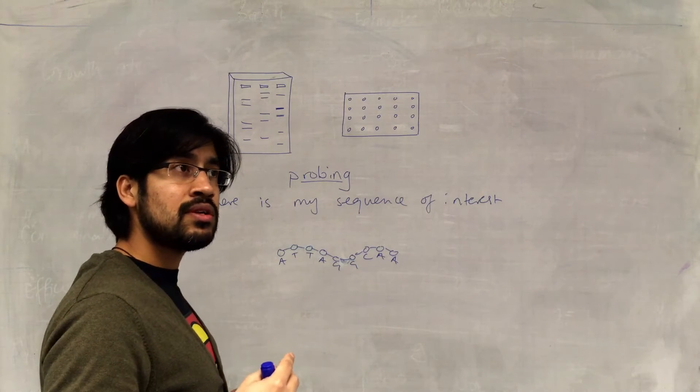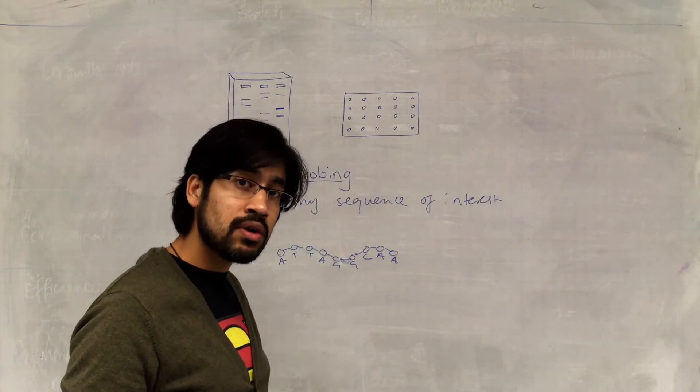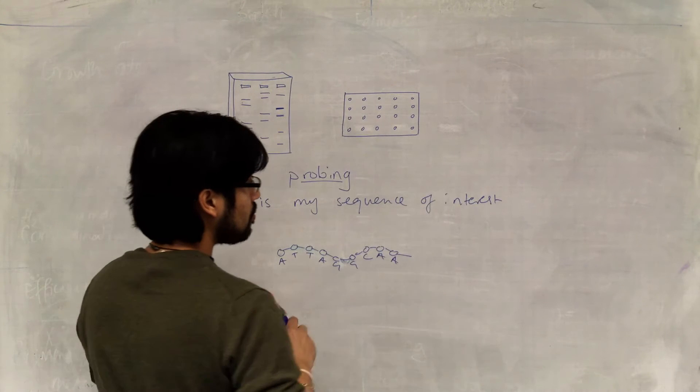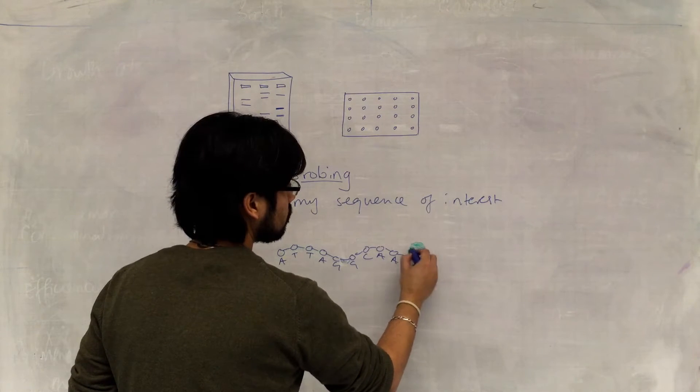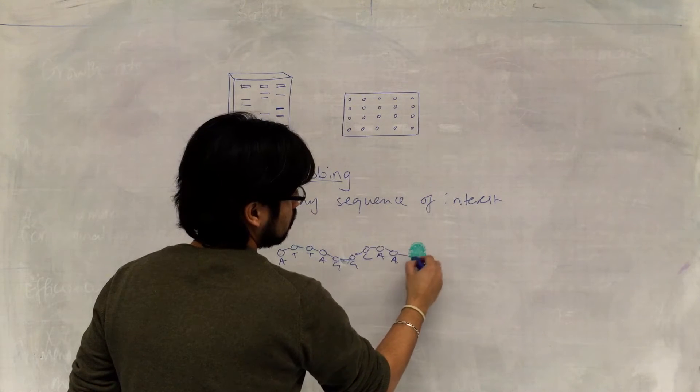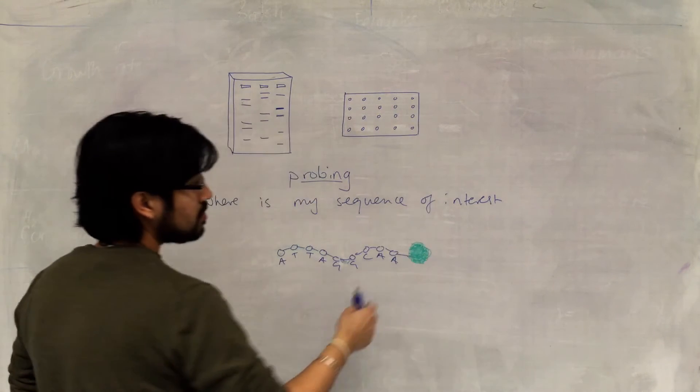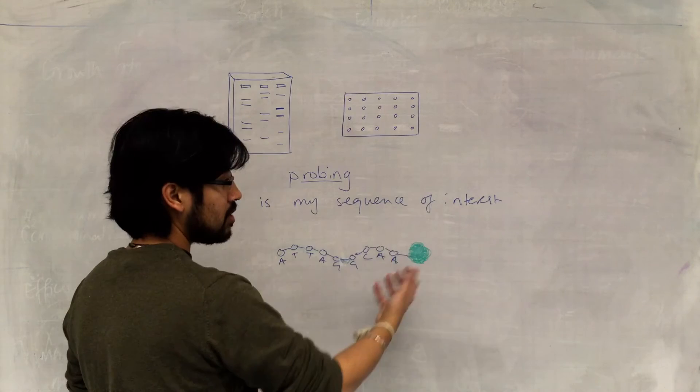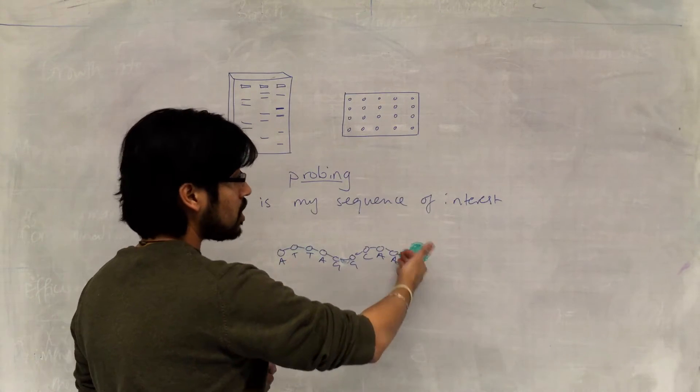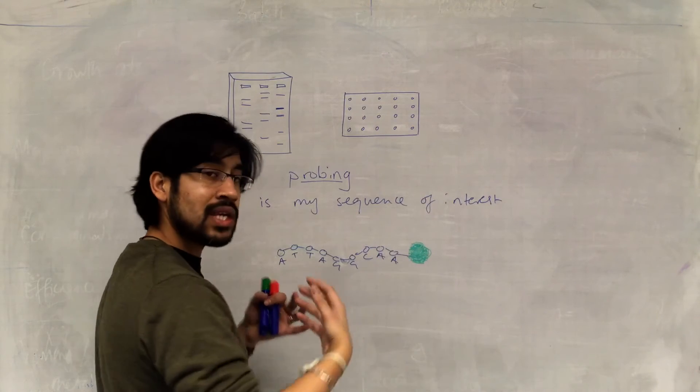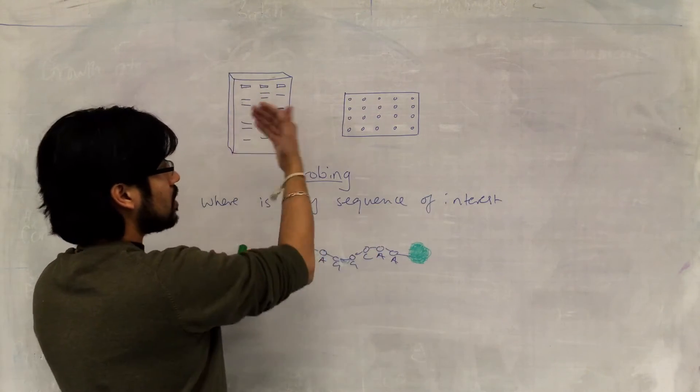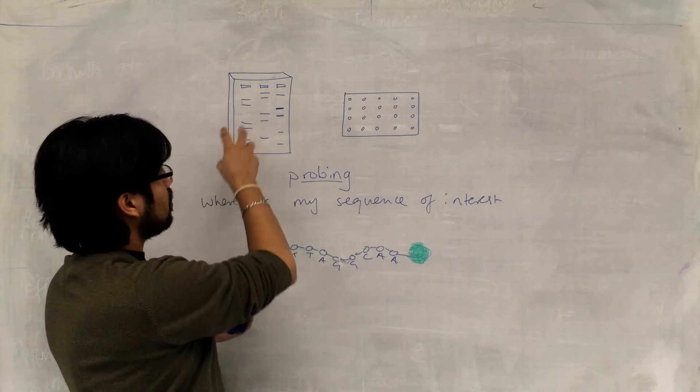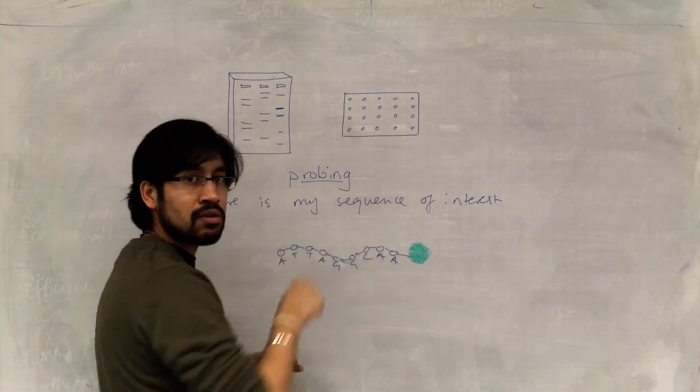But then the next question is, well, how do we know that that binding has occurred? And that's the other part of probes. So probes are usually modified with some kind of signal. So either the probe is radio-labeled, i.e., it's attached or modified so that it's got a radioactive isotope on it, and as long as we have some way of detecting that radioactivity, we'll know where it is that the probe has bound, and where, therefore, our DNA is with our sequence of interest.